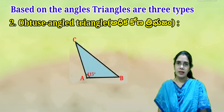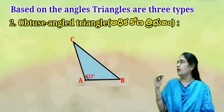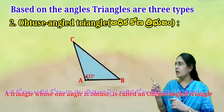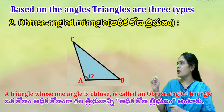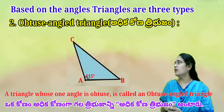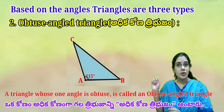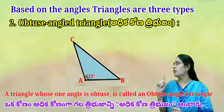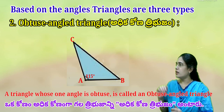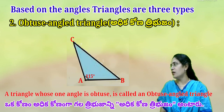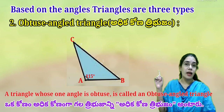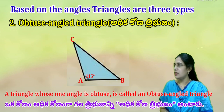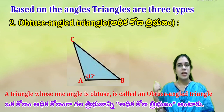The next type is the obtuse angle triangle (Adhikkha Kona Thribujamu). A triangle whose one angle is obtuse is called an obtuse angle triangle. Here, Angle A equals 115 degrees, so this is an obtuse angle triangle.